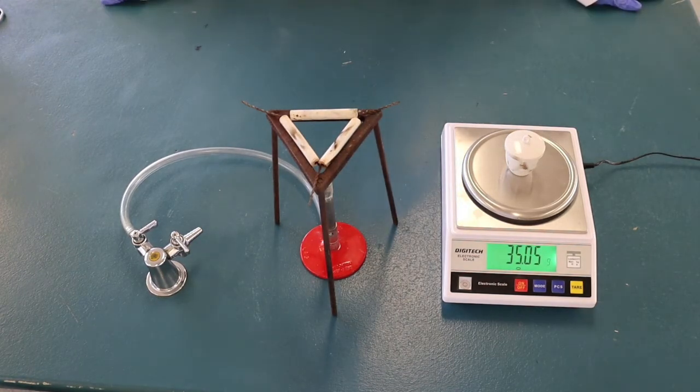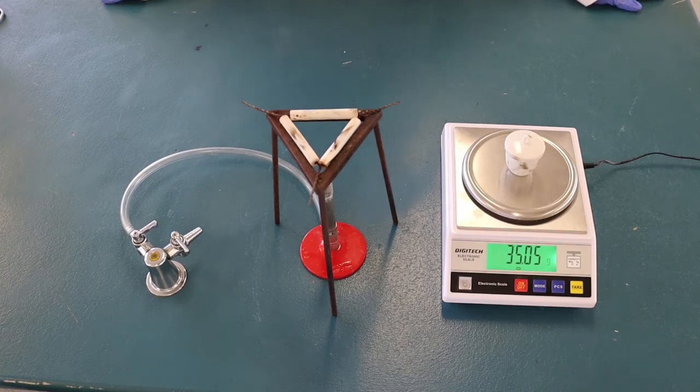Place the crucible on a pipe clay triangle on a tripod over the Bunsen burner and carefully heat the crucible until the magnesium begins to glow.